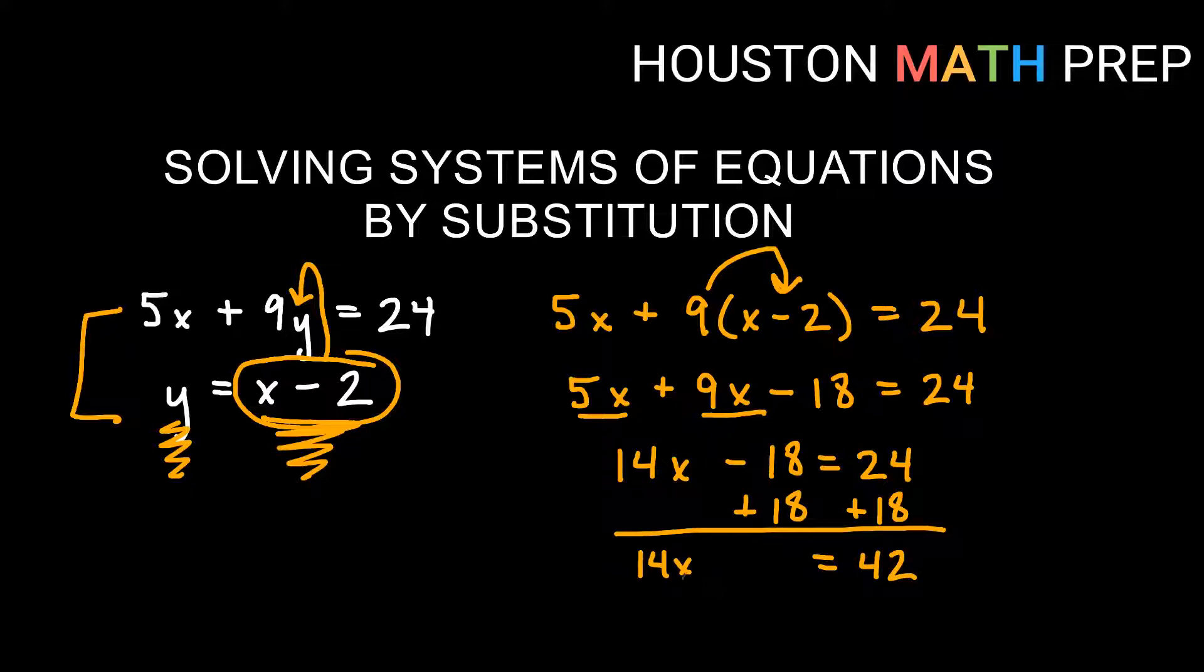And since it's 14 times x we do the opposite of times 14 which is divide by 14. And it turns out 42 divided by 14 is actually a whole number. It turns out we actually get that x is equal to 3.